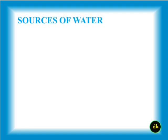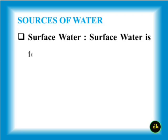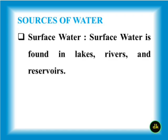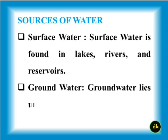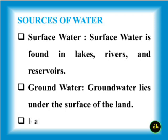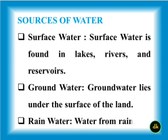Sources of water: Surface water is found in lakes, rivers, and reservoirs. Groundwater lies under the surface of land. Rain water comes from rain.